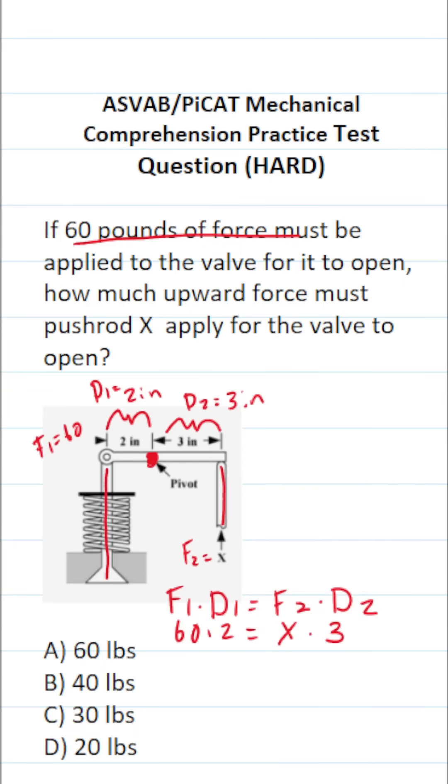All we have to do is solve for X. 60 times 2 is 120 equals 3X. Divide both sides by 3 to get X by itself. X equals 120 divided by 3, which is 40. In other words, this push rod has to apply 40 pounds of force to open this valve. So the answer is B.